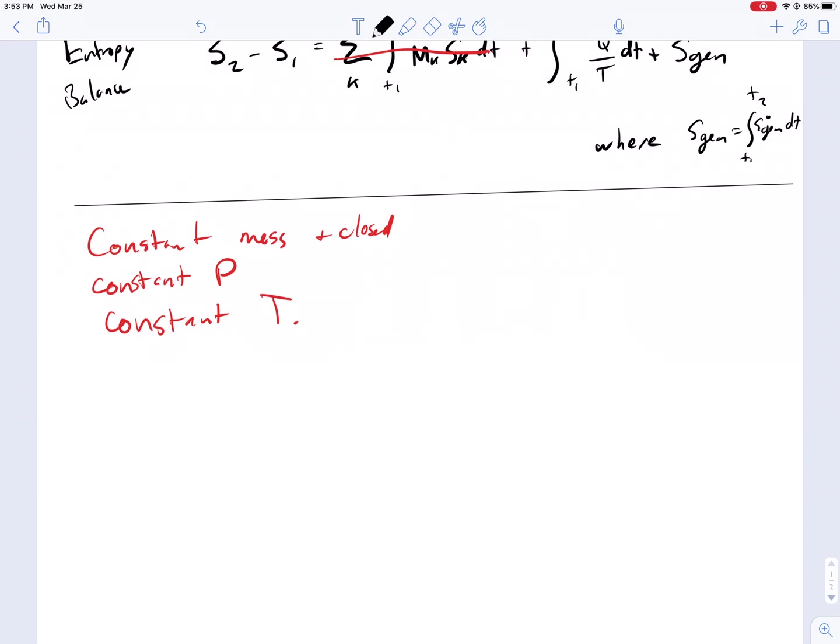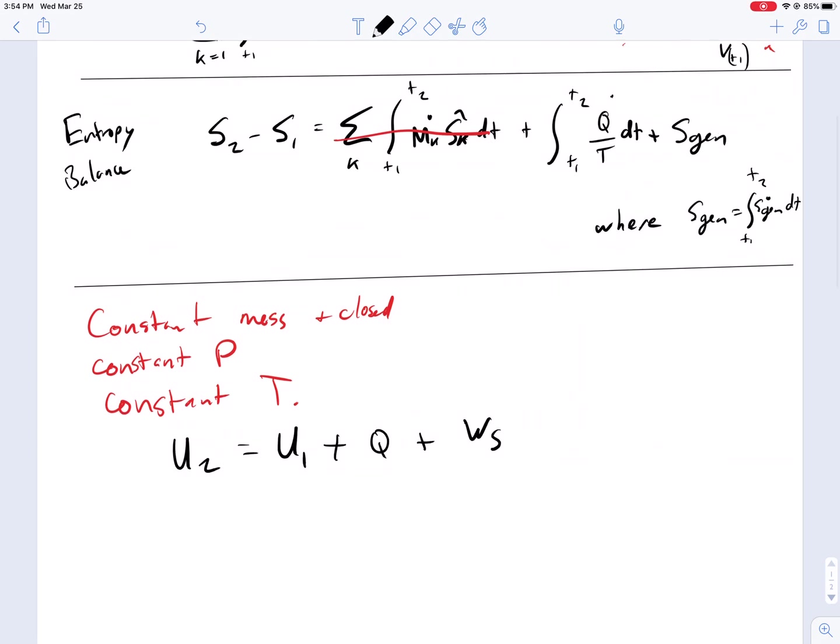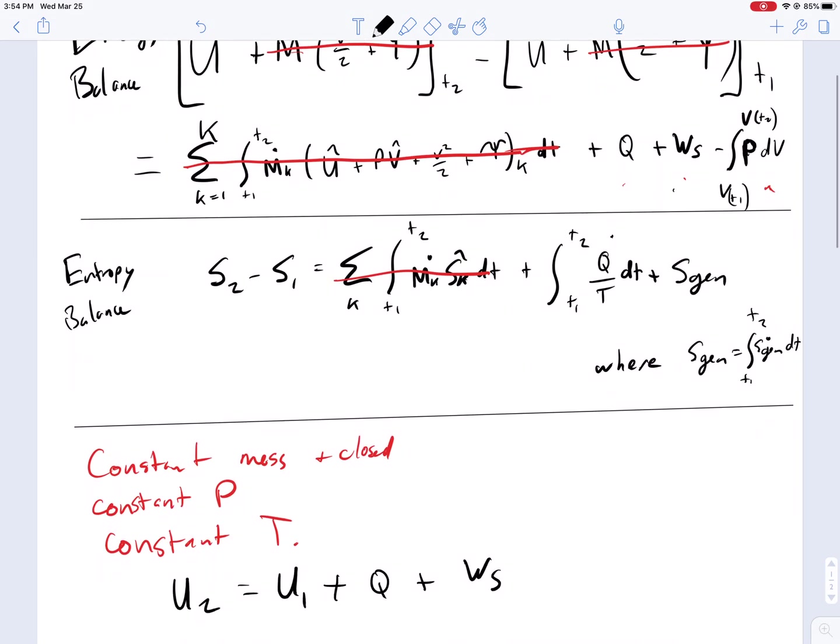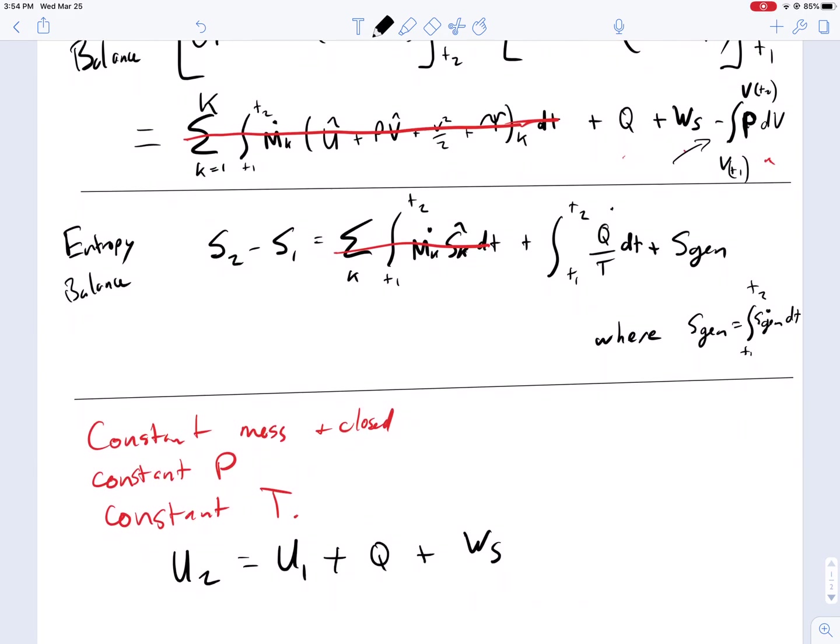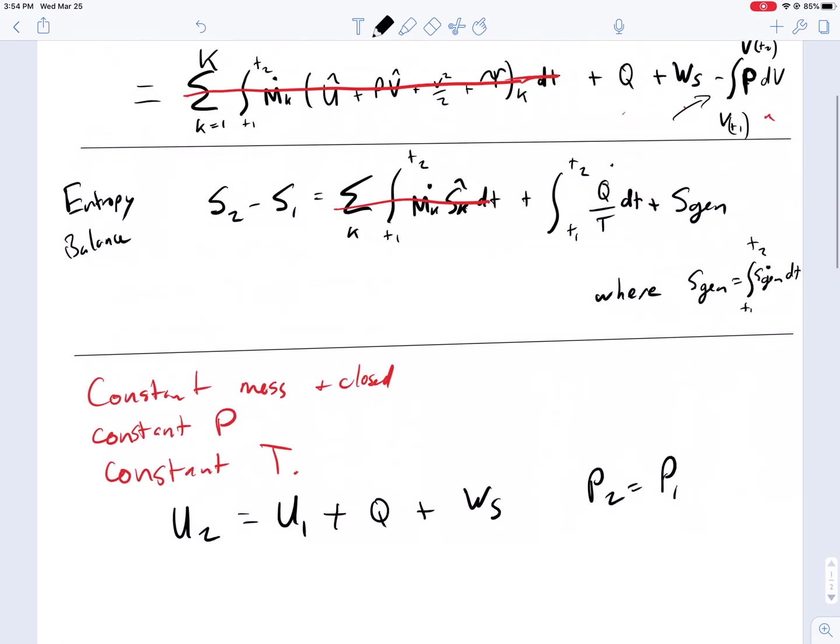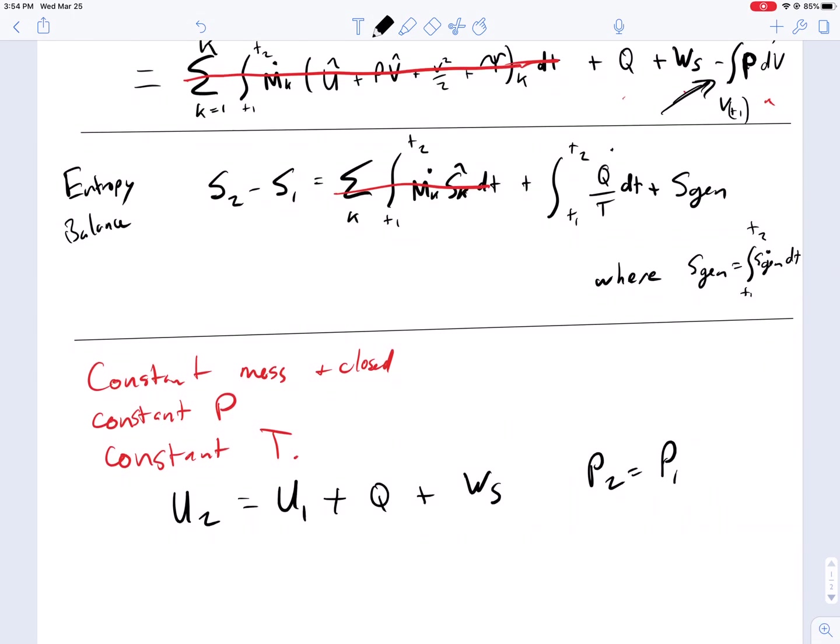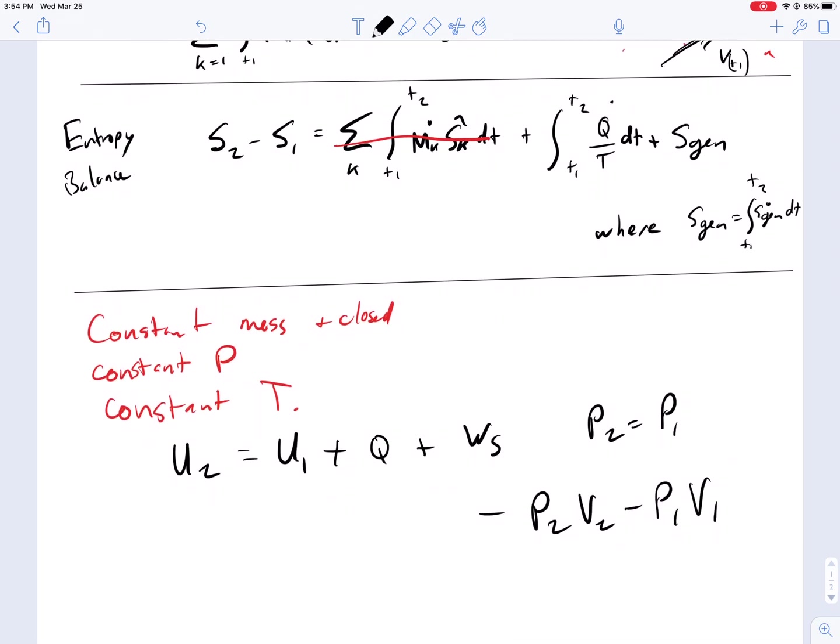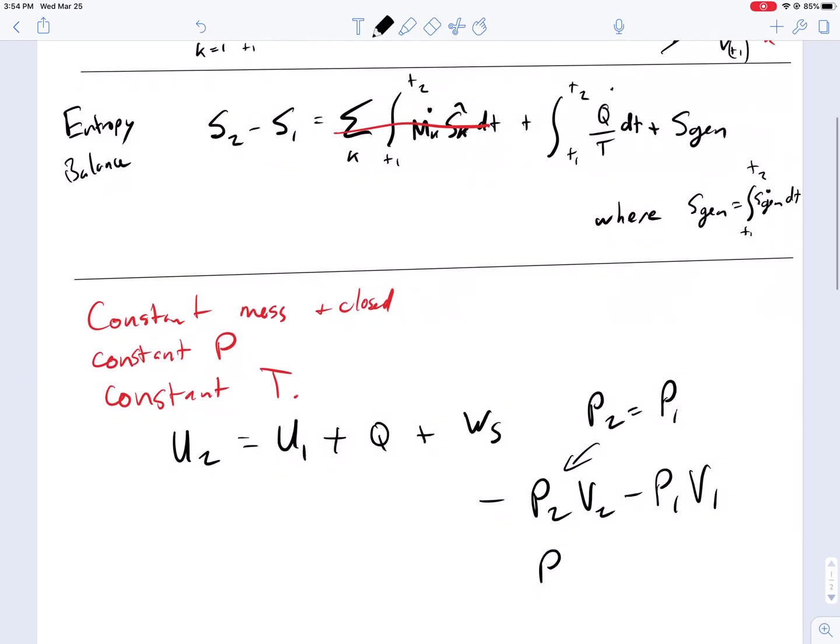I'm going to quickly rearrange for U. We're going to have U2 equals U1 plus Q plus WS. And if we integrate this integral out for a short interval, we're going to have P2 equals P1, so then P is a constant. Then the integral of this term for a constant is trivial. So we have minus P2 V2 minus P1 V1, which is equivalent to P times V2 minus P times V1.